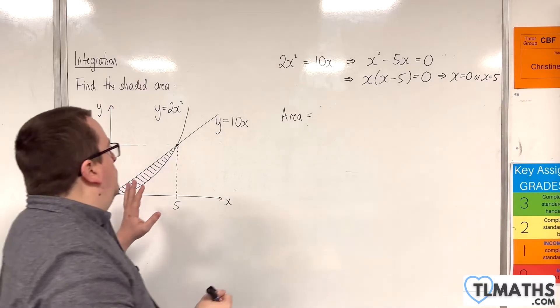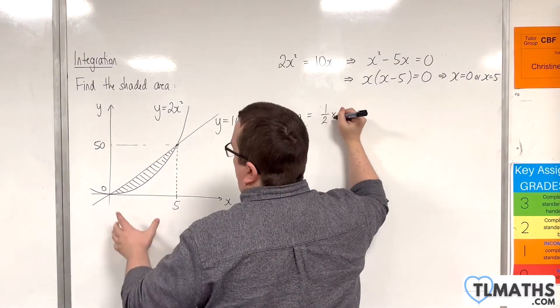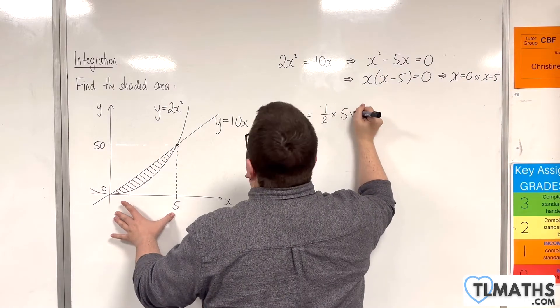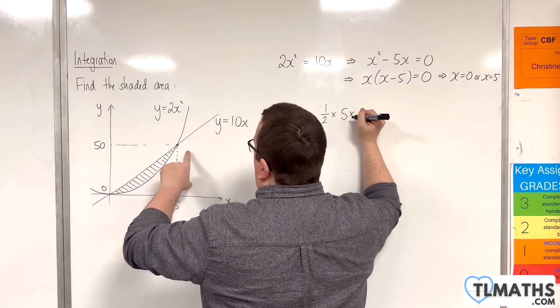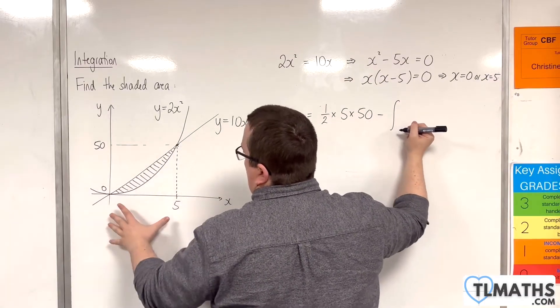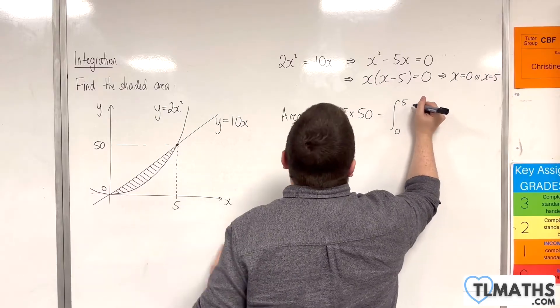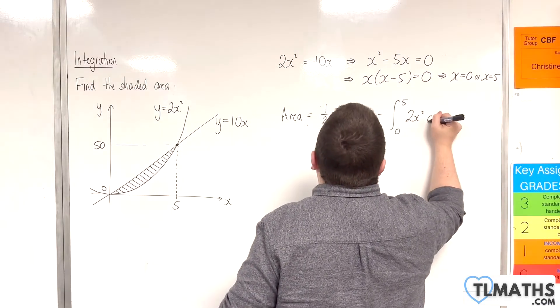So I'm going to work out the area of the triangle, which is going to be 1 half times the base, which is 5, times by the height, which is 50. And then I'm going to take away the integral between 0 and 5 of the curve 2x squared dx.